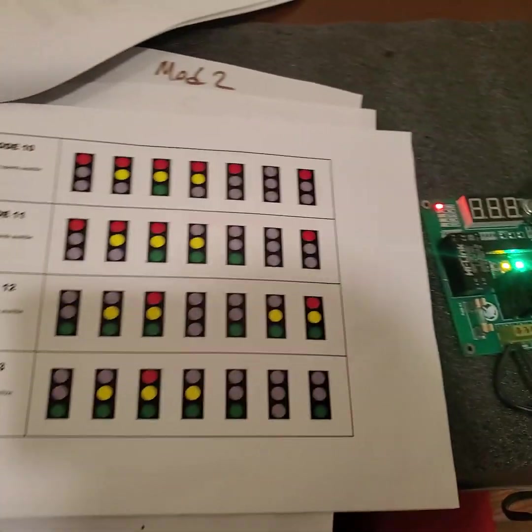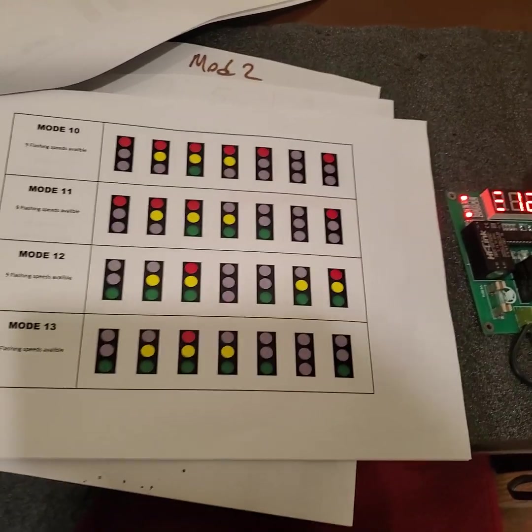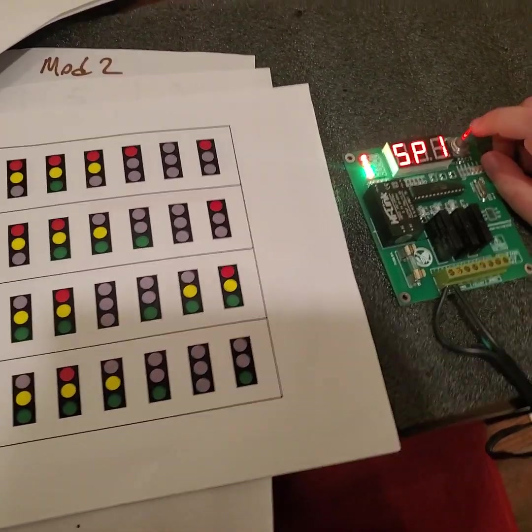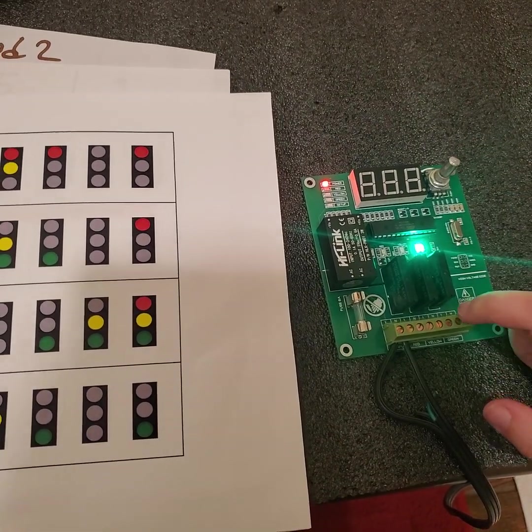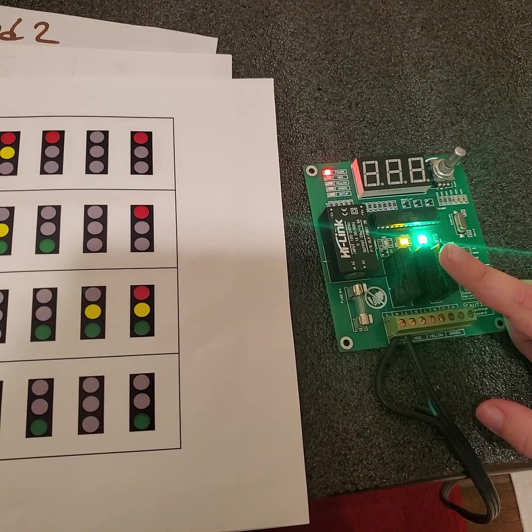We're going to press the button, move it to 12, and then we're going to do speed 1. Now you can see that it's moving very slowly.